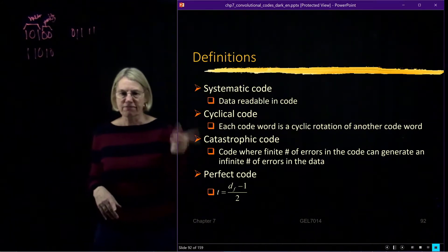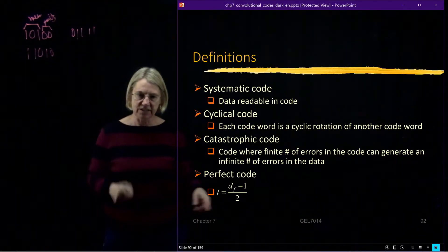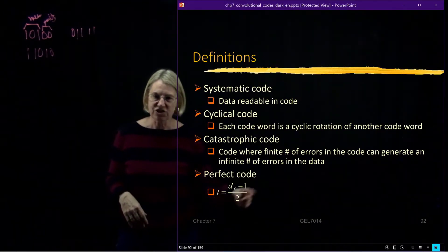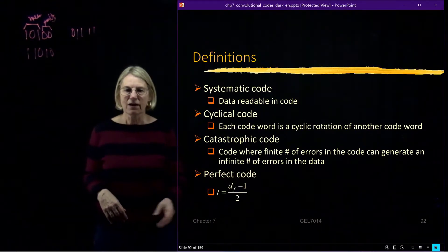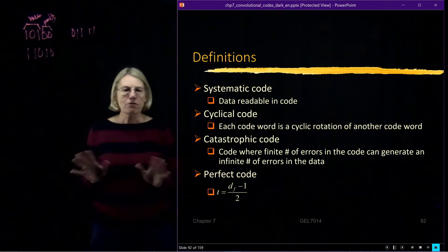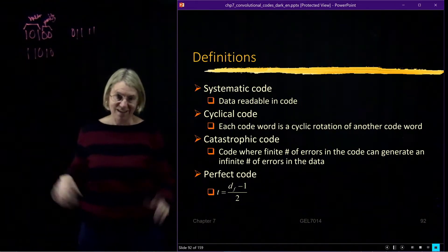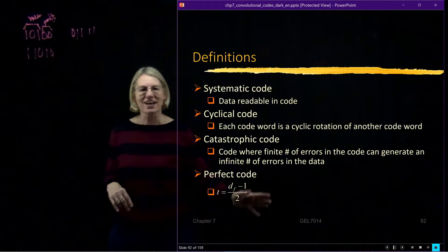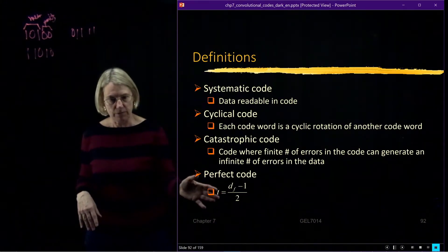The last thing is a perfect code. A perfect code, remember I said that the number of errors that could be corrected was the greatest integer in? Suppose the greatest integer is exactly into it. We call that a perfect code. Not perfect from the sense of good performance, perfect from the aesthetic beauty. We don't need that greatest integer, it's exactly into it. So just the name of a perfect code, but not a high performance code necessarily.